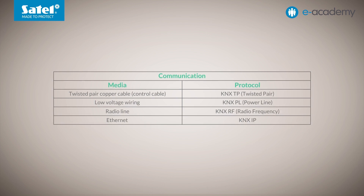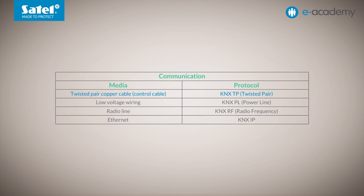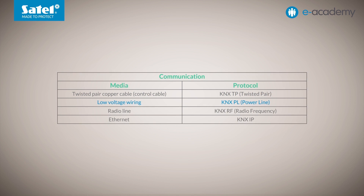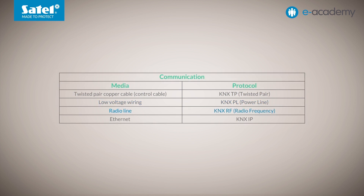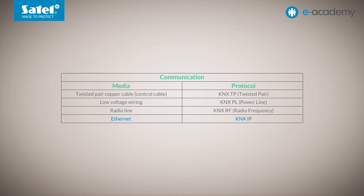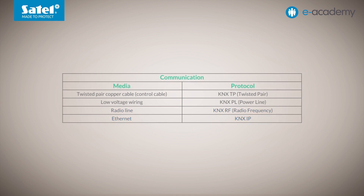These are respectively: Twisted Pair and the KNX-TP protocol (TP from Twisted Pair), Low Voltage Wiring and KNX-PL protocol (PL from Powerline), Wireless Radio Line and KNX-RF protocol (RF from Radio Frequency), and Ethernet and KNX-IP protocol. The one that is most commonly used in practice is Twisted Pair TP. This is also the one we will focus on now and use in coming episodes of the e-Academy.